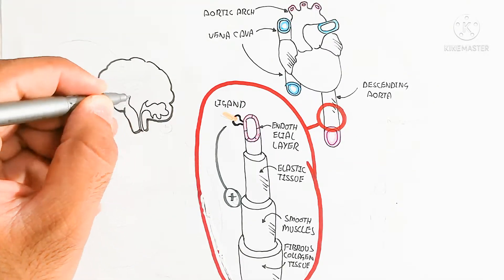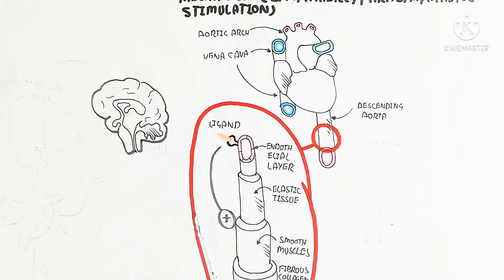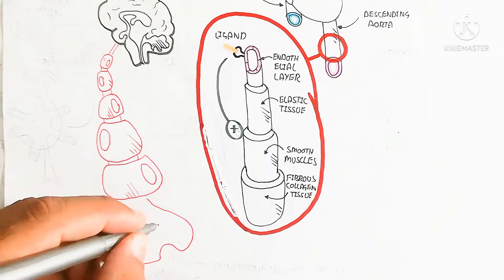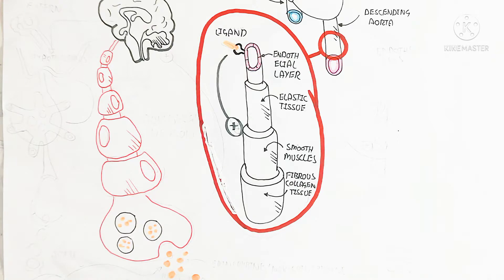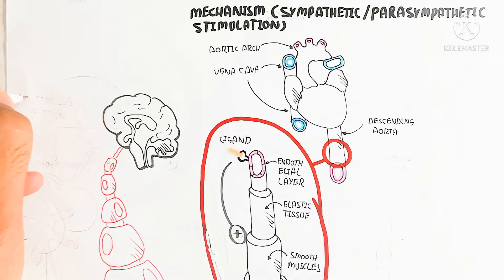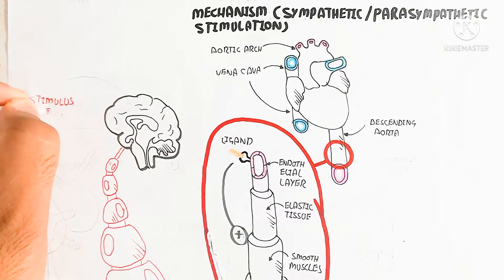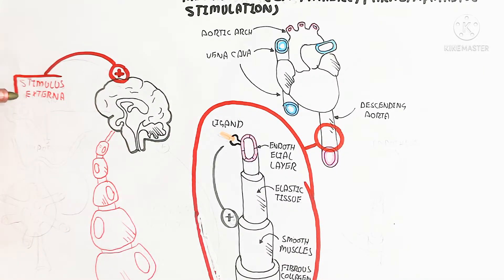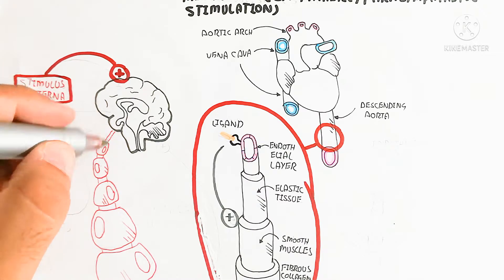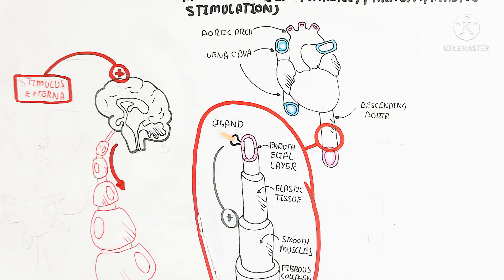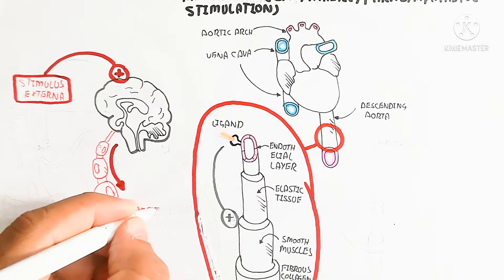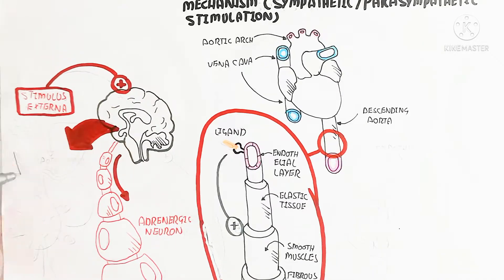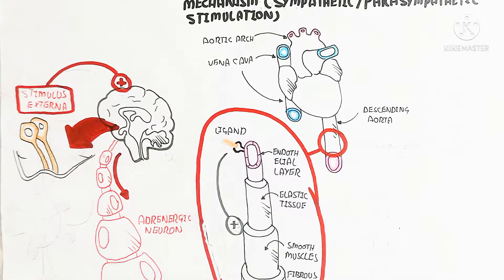Let's begin to understand sympathetic and parasympathetic stimulation. First, we will look at vasoconstriction. This is the adrenergic neuron, which stimulates the release of epinephrine and norepinephrine by exocytosis — these are the neurotransmitters. An external or internal stimulus will first stimulate the higher brain cortex to generate a nerve impulse.